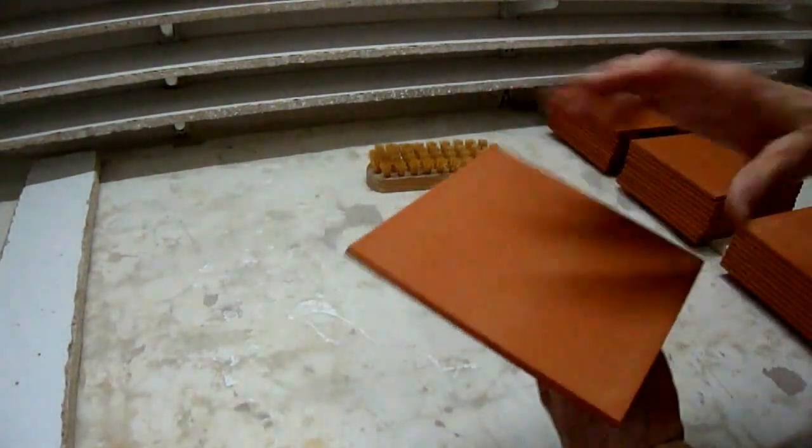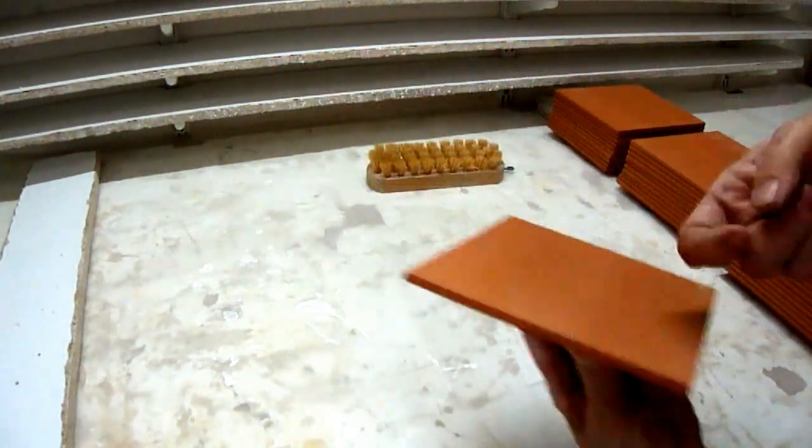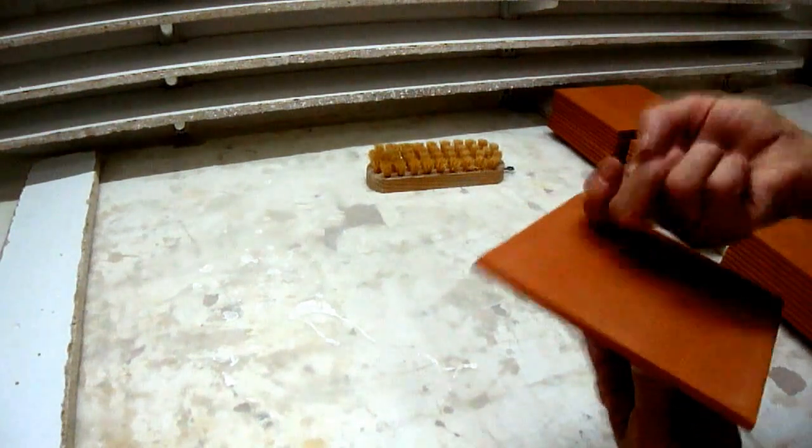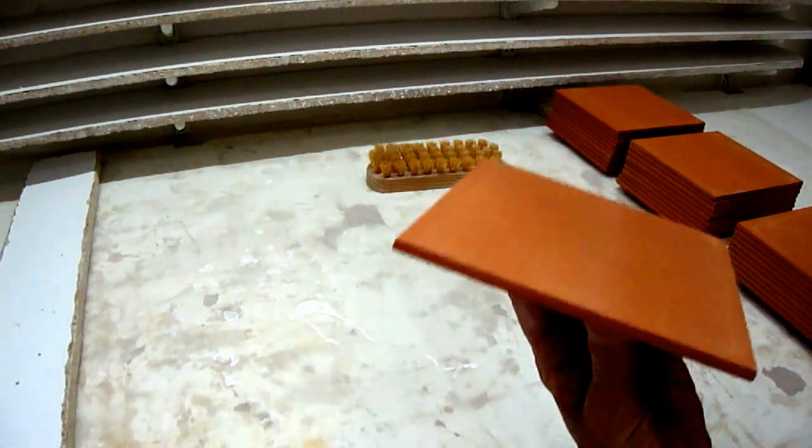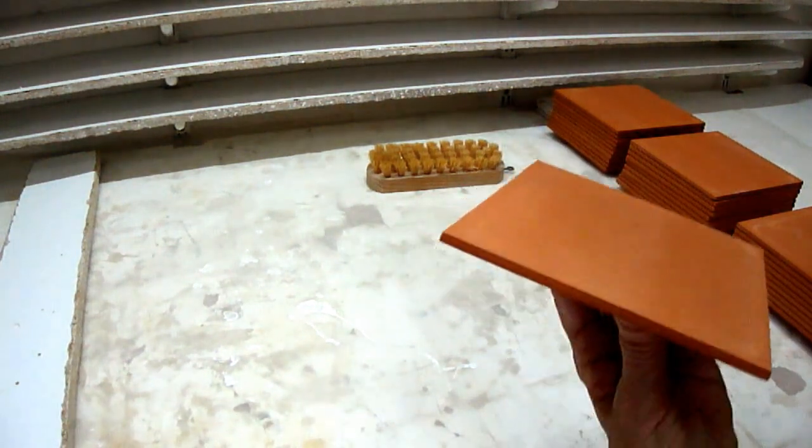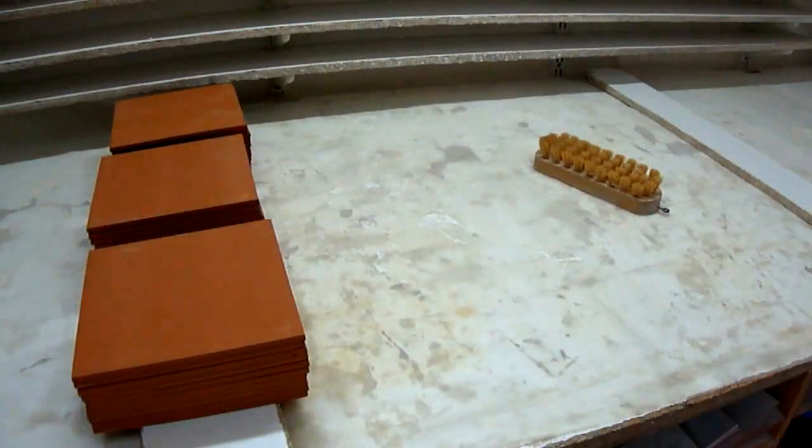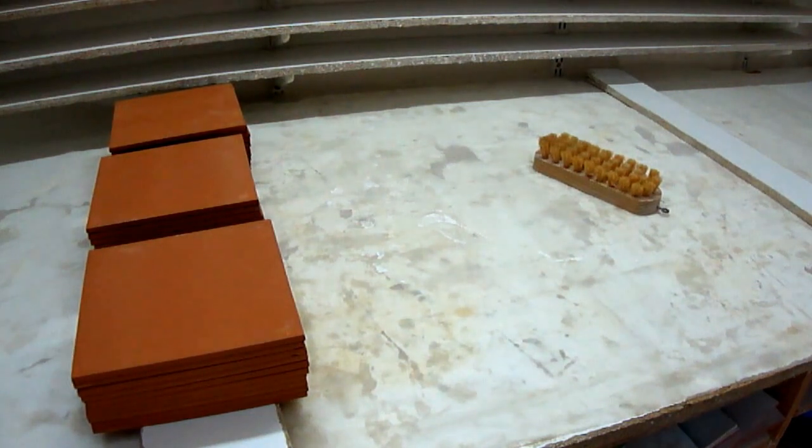First, sound your tile. Hold it underneath and with a finger tap it. If the sound is high, it's not broken. If the sound is flat, it's broken and don't use it. Now you have sounded all the tiles and they are on the left.